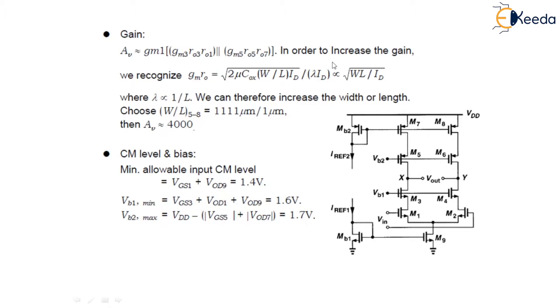So, to increase, how we can increase this gain, we can recognize that gm ro is equals to, this is simple cascode execution, is equals to square root of 2 μn Cox W by L ID upon lambda ID. This is in product with this. And it's proportional to square root of WL by ID.